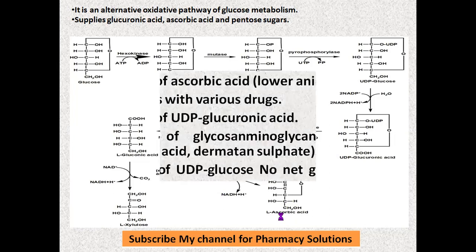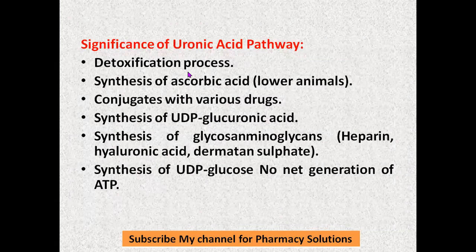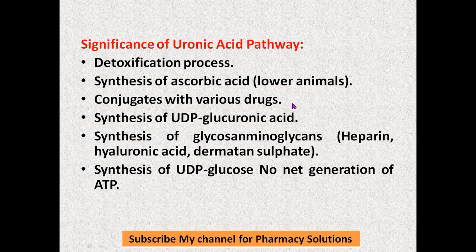Coming to the significance of the uronic acid pathway — it has a lot of significance. It is a detoxification process, and it is involved in the synthesis of ascorbic acid in lower animals. The pathway also involves conjugation with various drugs, where glucuronic acid conjugates with drugs making them water-soluble so they are easily excreted.